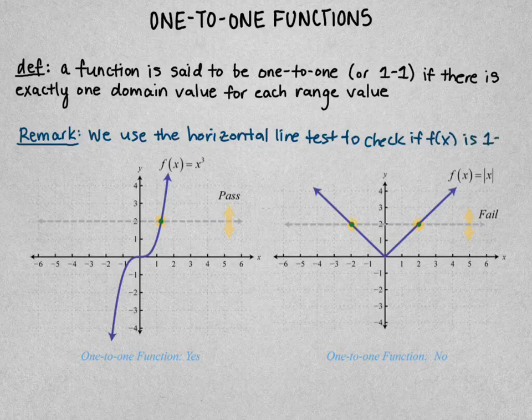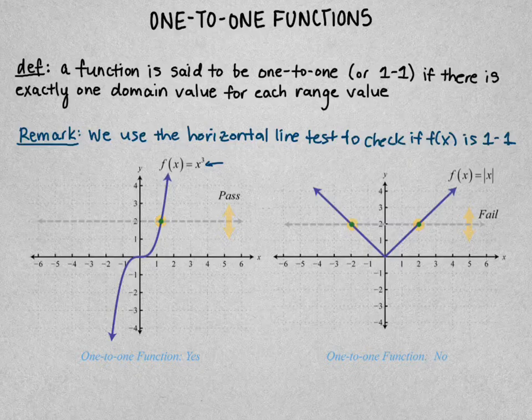So how does that work? If we start with f(x) = x³, we see this little horizontal line in gray that passes through the function. What we see is that there's only one x for every y value, so this function is one-to-one.